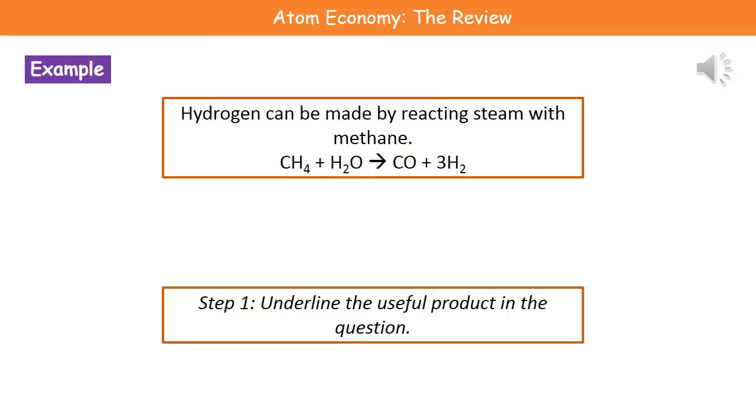For those doing the higher tier paper, you need to do slightly more complicated calculations. I'll take you through what I mean by a more complicated equation. Our next example is that hydrogen can be made by reacting steam with methane. CH₄ + H₂O → CO + 3H₂. Again, you'll be given the equation on the exam paper. Just like before, we underline our useful product, which is again hydrogen.